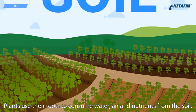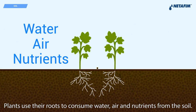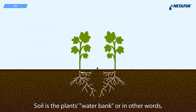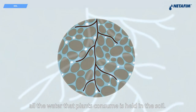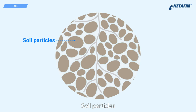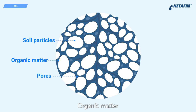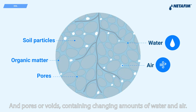Plants use their roots to consume water, air, and nutrients from the soil. Soil is the plant's water bank — in other words, all the water that plants consume is held in the soil. Soil has three main components: soil particles, organic matter, and pores or voids containing changing amounts of water and air.